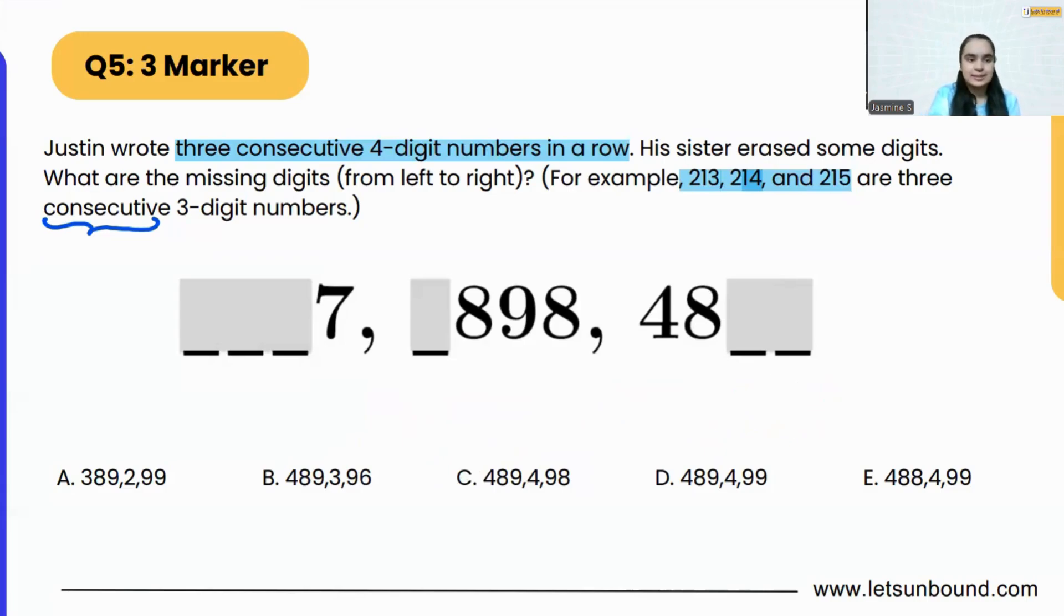Now in this question, let's see. This is the ones place, as it is a four-digit number. So ones place, tens place, hundreds place, thousands place. And it's the same thing in all the numbers because all are four-digit numbers.